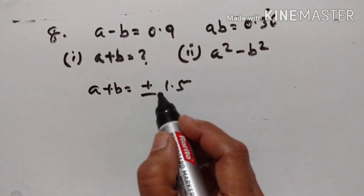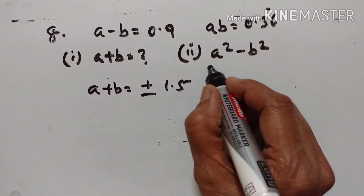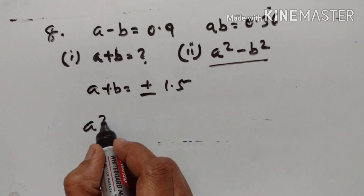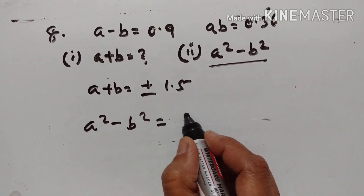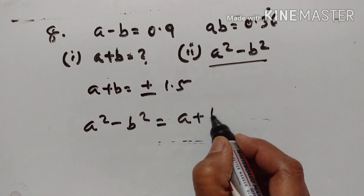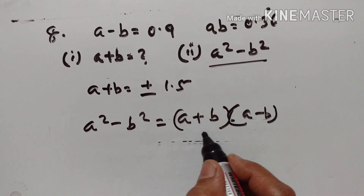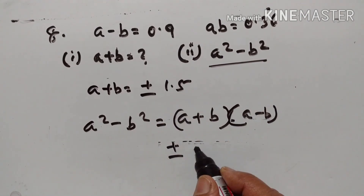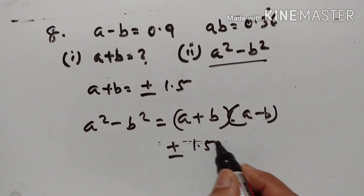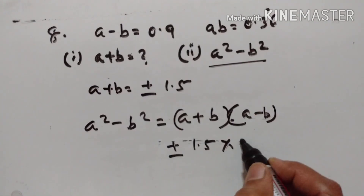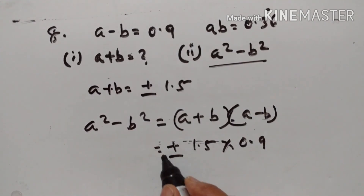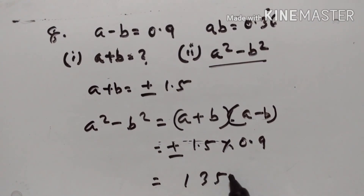A + B = ±1.5. We also have to find A² − B². Using the formula A² − B² = (A+B)(A−B): A+B = ±1.5 and A−B = 0.9. So A² − B² = ±1.5 × 0.9 = ±1.35.